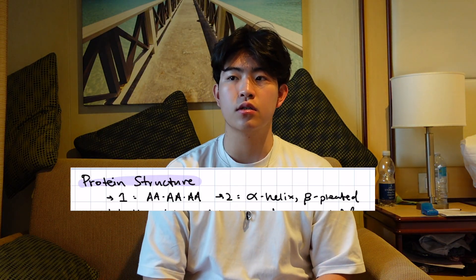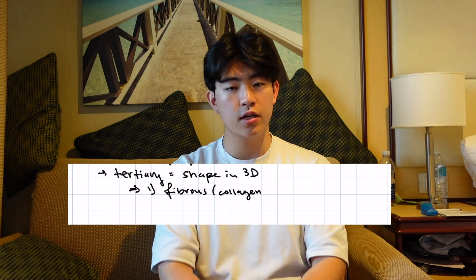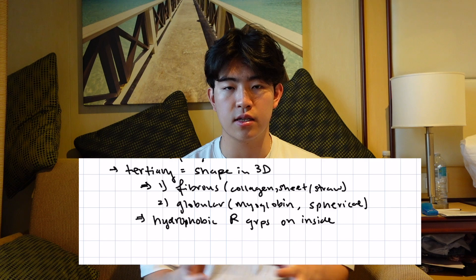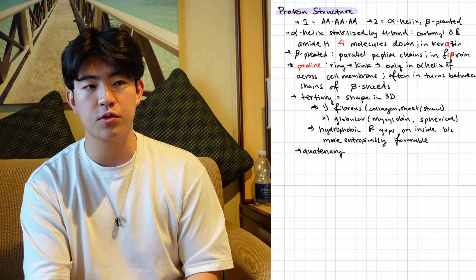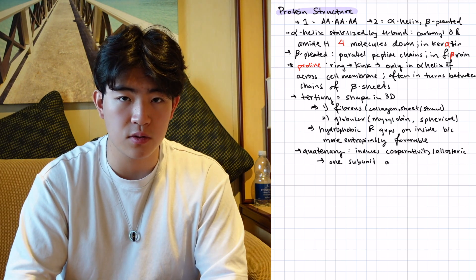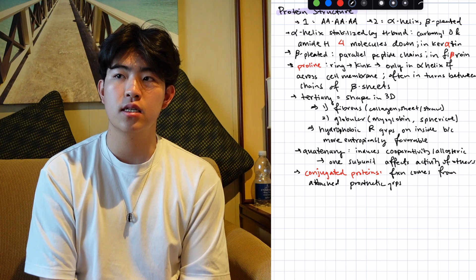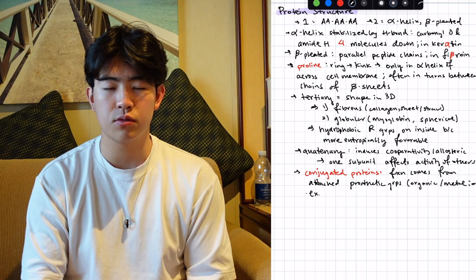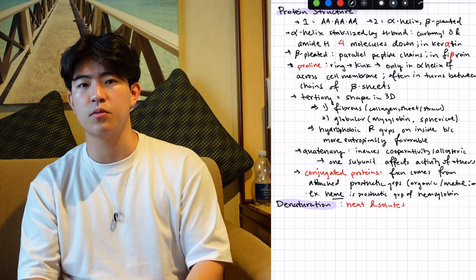Moving on to protein structure: primary structure is just the amino acid chain. Secondary structure consists of alpha helices and beta-pleated sheets. Tertiary structure is how the protein looks in 3D — how it folds. There are two types: fibrous and globular. The structure forms because hydrophobic groups interact with each other on the inside to stay away from the aqueous environment. Quaternary structure is multiple tertiary structures interacting with each other and can induce cooperativity or allosteric effects — if one subunit is changed it affects the activity of the others. Conjugated proteins are proteins whose functions come from attached groups called prosthetic groups; for example, in hemoglobin the heme is the prosthetic group that enables oxygen carrying.